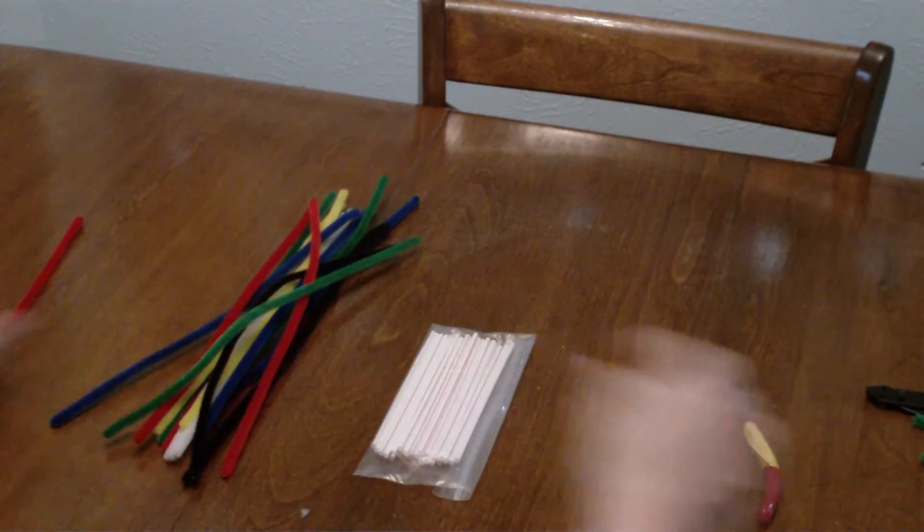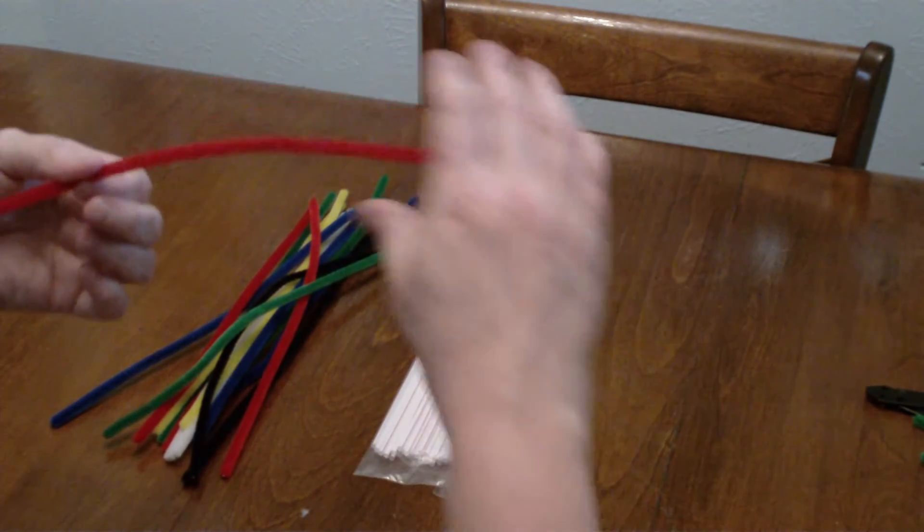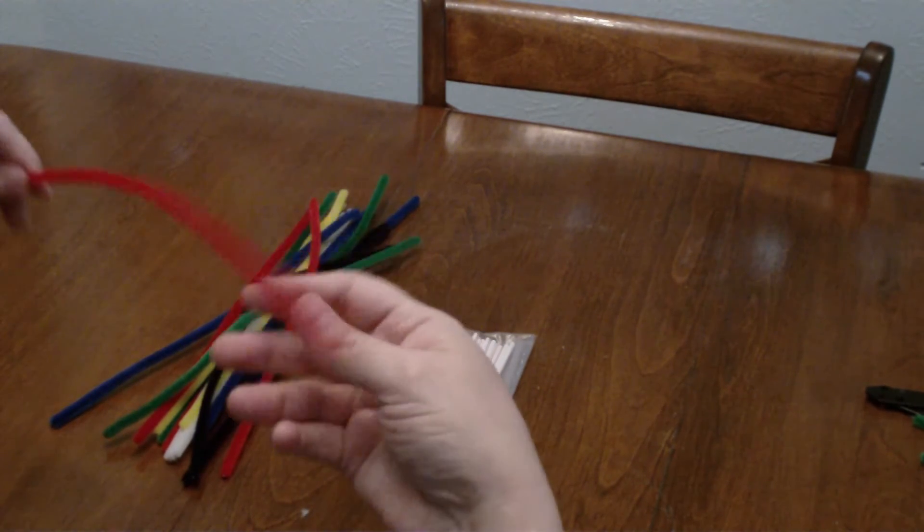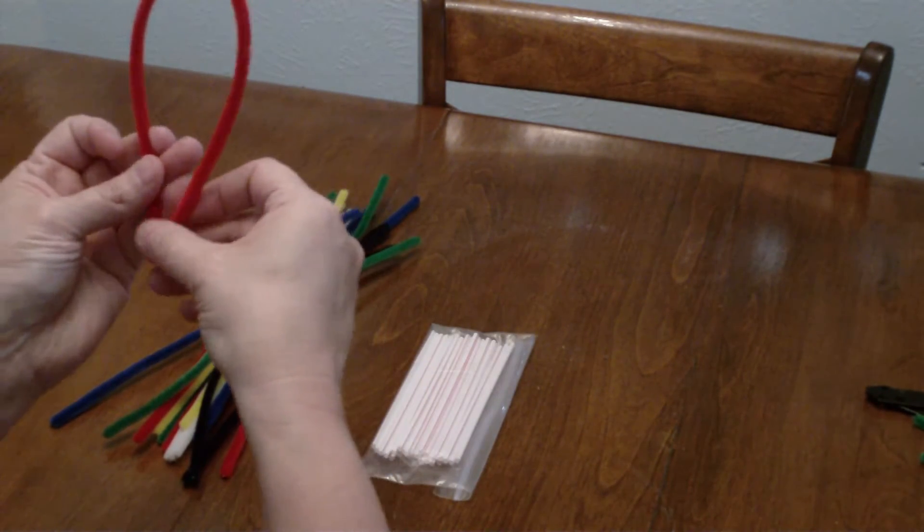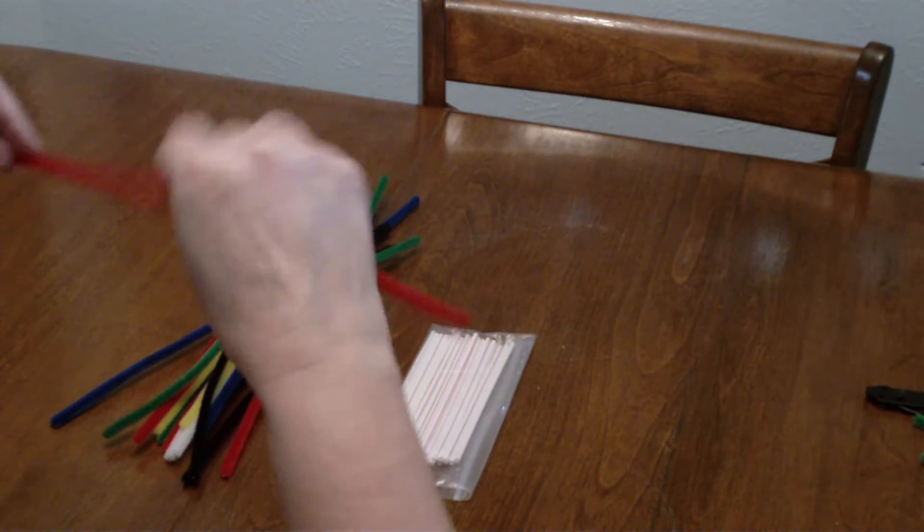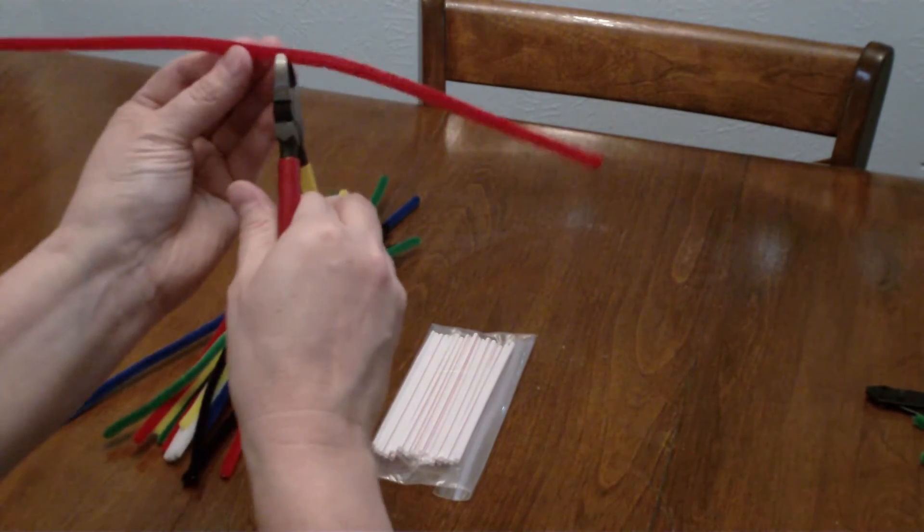So I'm going to take your chenille stem, your pipe cleaner here, and you want to cut it in the middle. Now I don't want you to bend it, because if you bend it and make a crease, that basically makes kind of like a hook on the end which can get caught when we start putting this thing together. So just kind of eyeball it about where the middle is.